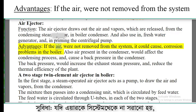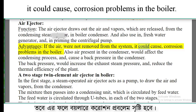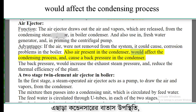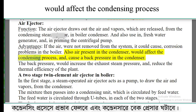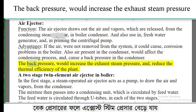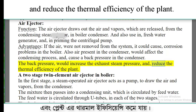Advantages: if the air were not removed from the system, it could cause corrosion problems in the boiler. Also, air present in the condenser would affect the condensing process and cause a back pressure in the condenser. The back pressure would increase the exhaust steam pressure and reduce the thermal efficiency of the plant.